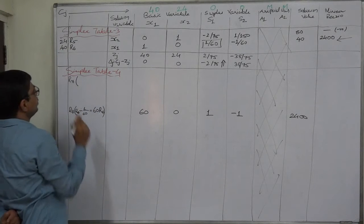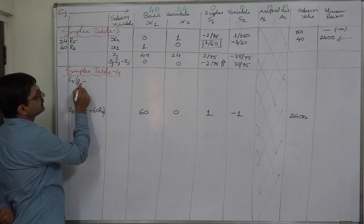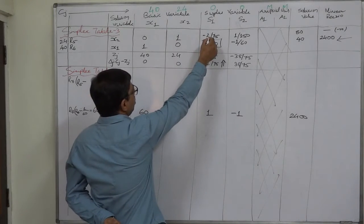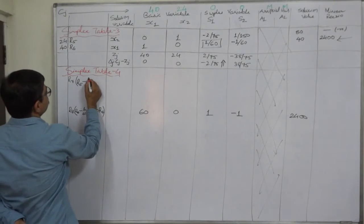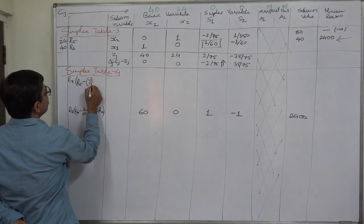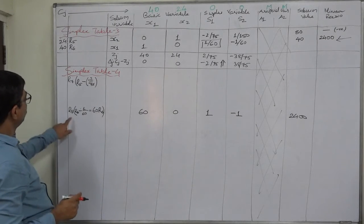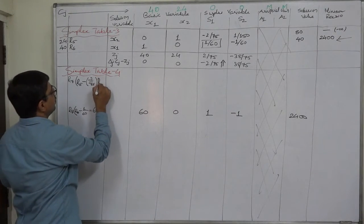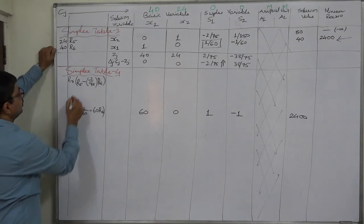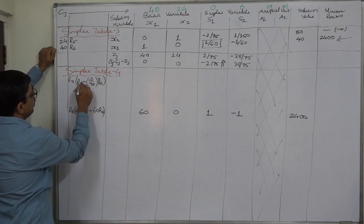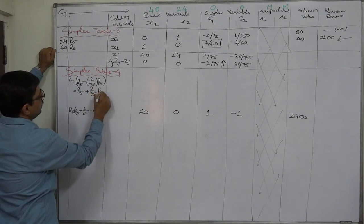Row 7 will take place of row 5. So old row minus the sign element in the key column, minus 2/75, into the replaced row R8. Ultimately it will be something like R5 minus (minus), plus 2/75 into R8.